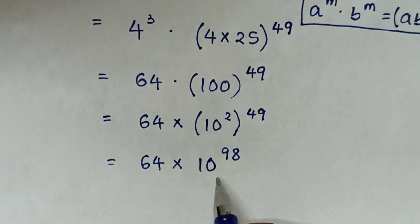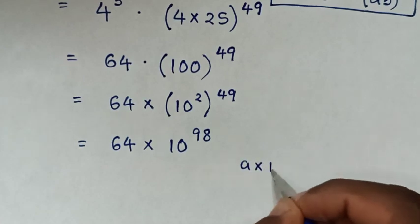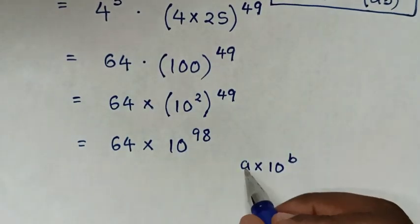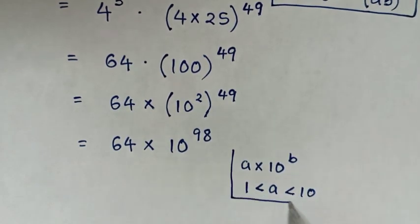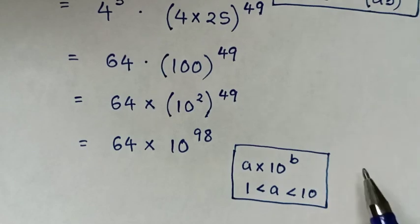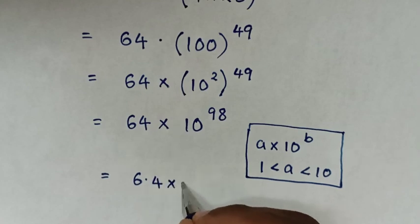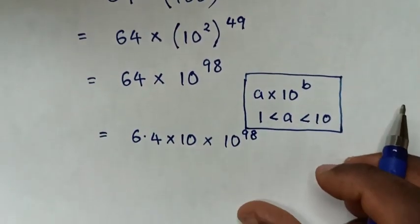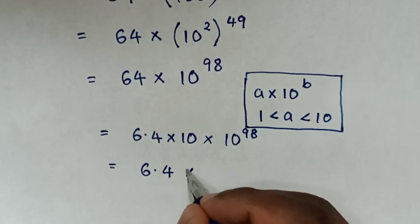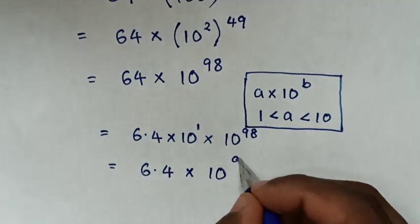Then we'll express this in the form of scientific notation, whereas scientific notation is in the form of a times 10 power b, where a is between 1 and 10, so 1 is less than a and a is less than 10. Then it will be equal to: 64 is 6.4 times 10, then multiply by this exponent 10 power 98. Then, in the next step, it will be equal to 6.4 times 10, and here 10 is the same as 10 power 1, so it will be 1 plus 98 is power 99.